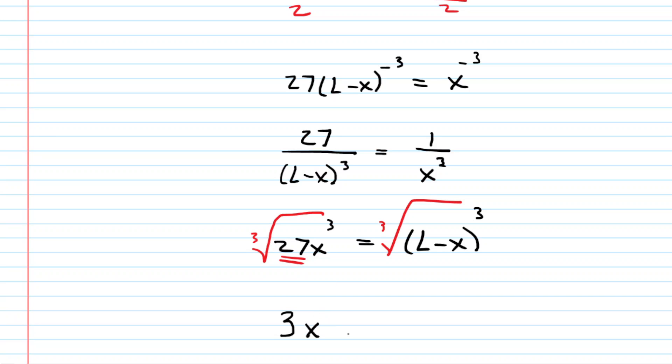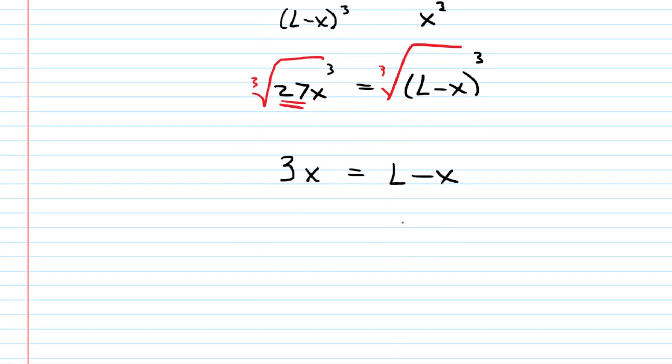So now we'll have 3x to the power of 1, and this will equal L minus x. We can add the x to the other side. We get 4x is equal to L and then divide both sides by 4. And we can see that this x value is simply going to be L divided by 4.